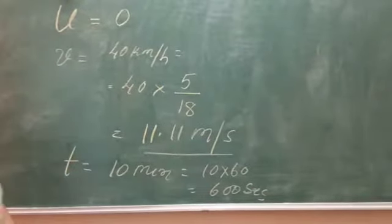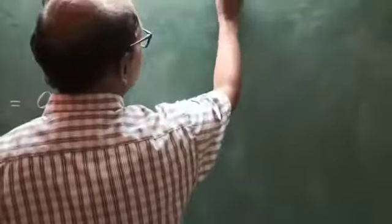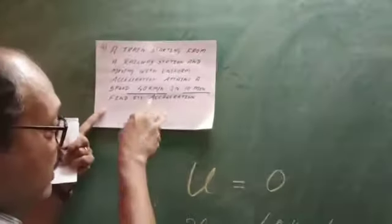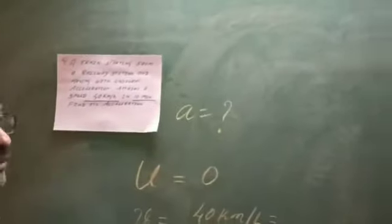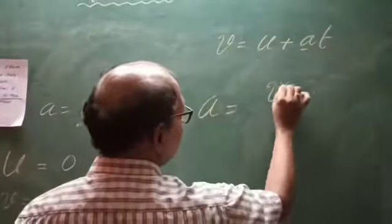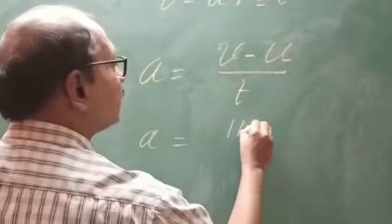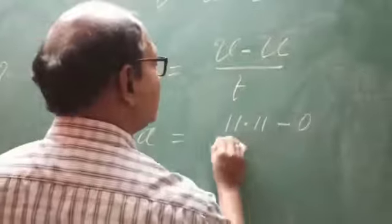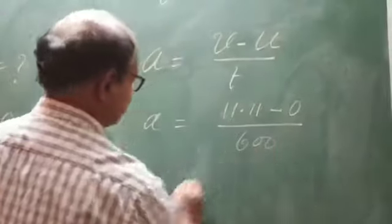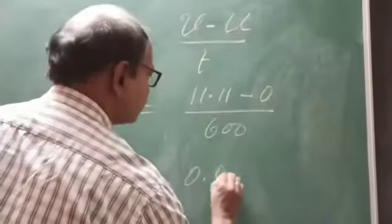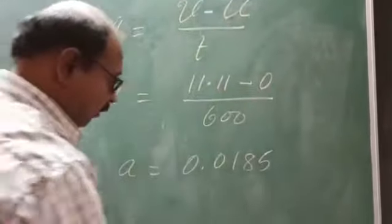We have a simple formula from equations of motion: V is equal to U plus A times T. We need to find acceleration. So A is equal to V minus U divided by T. Therefore, A is equal to 11.11 minus 0 divided by 600. So acceleration is equal to 0.0185 meters per second squared.